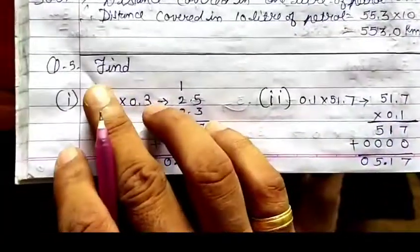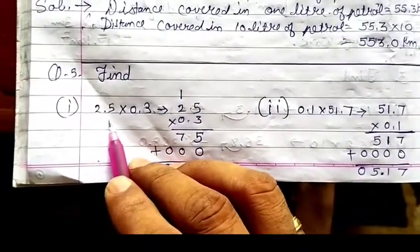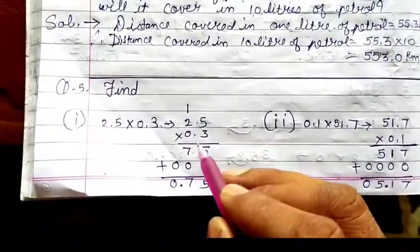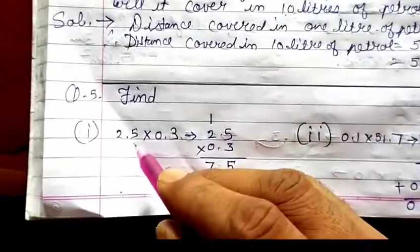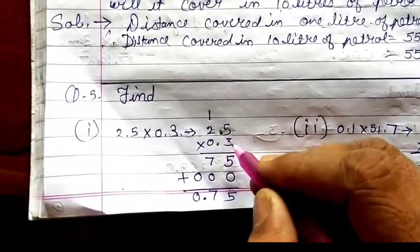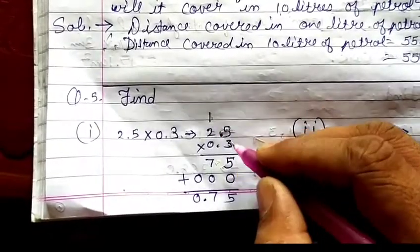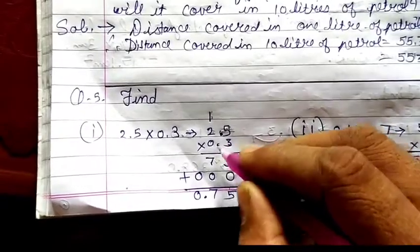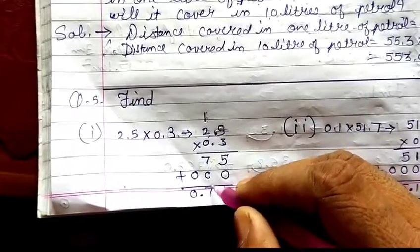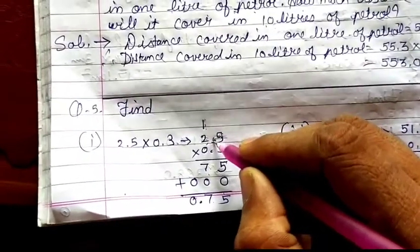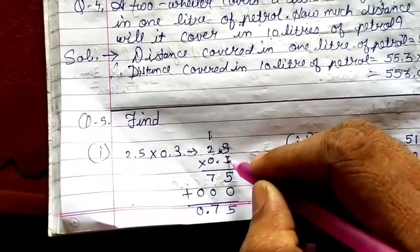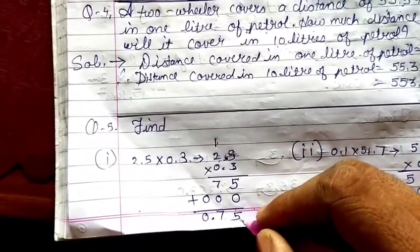Question 5: here we multiply a decimal with another decimal. It is very simple — just apply the same multiplication rule and at the end place the decimal correctly. For 2.5 into 0.3: multiply 3 by 5 to get 15, carry 1; 3 by 2 is 6, plus 1 is 7. Then multiply 0 by 5 and 2, giving 0. Adding up: 75. Count decimal digits: one after the decimal in 2.5 and one in 0.3, so 1 plus 1 equals 2. Leave 2 digits from the last and place the decimal — answer is 0.75.